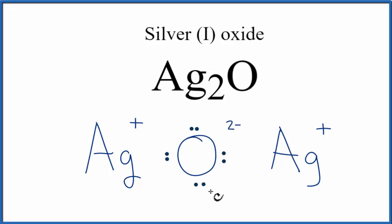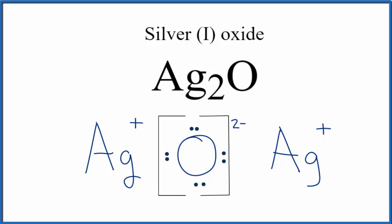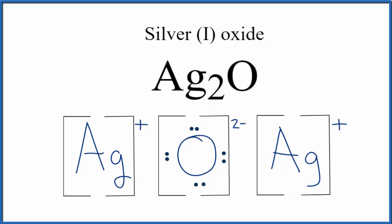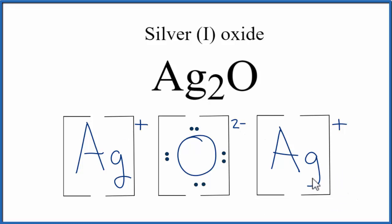We'll put brackets around the Oxygen to show that it's an ion. Often you'll also see brackets around the cation — the positive ion. That makes this the Lewis structure for Ag2O, Silver Oxide. Do note that this is called a formula unit, and that crystals are made up of an array of regularly repeating formula units.